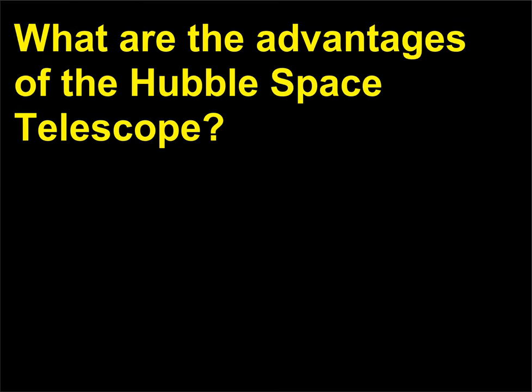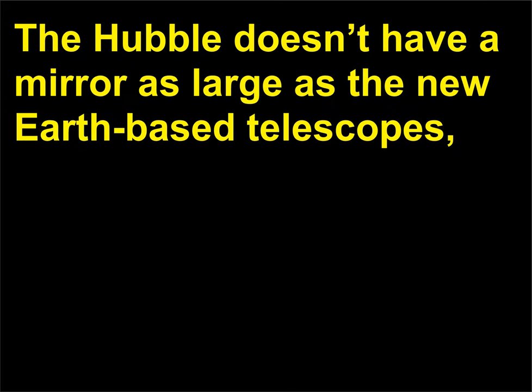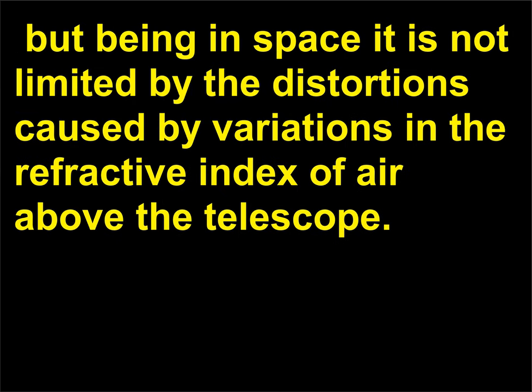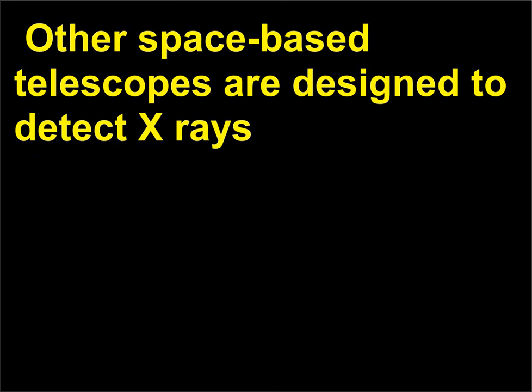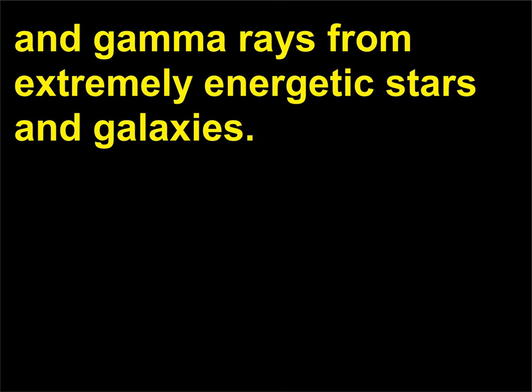What are the advantages of the Hubble Space Telescope? The Hubble doesn't have a mirror as large as the new Earth-based telescopes, but being in space it is not limited by the distortions caused by variations in the refractive index of air above the telescope. In addition, a space telescope can detect the infrared and ultraviolet rays blocked by Earth's atmosphere. Other space-based telescopes are designed to detect X-rays and gamma rays from extremely energetic stars and galaxies.